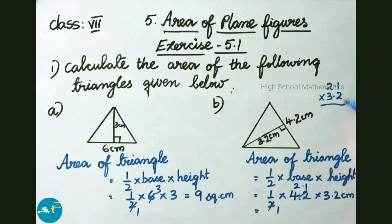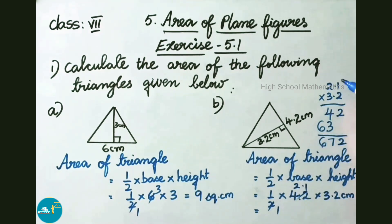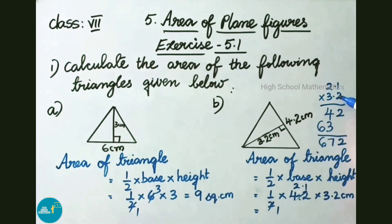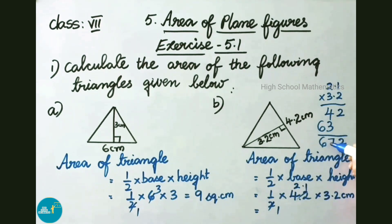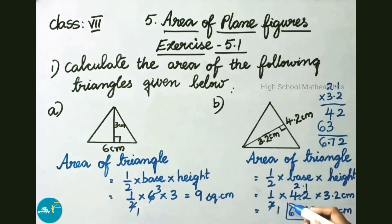Multiply normally: 2 ones are 2, 2 twos are 4. Next 3 ones are 3, 3 twos are 6. Add: 4 plus 3 is 7, bring down 6. There is a decimal after 1 digit in each number, so total 2 decimals. From the right side, place the decimal point 2 digits in. So the answer is 6.72 square centimeter.